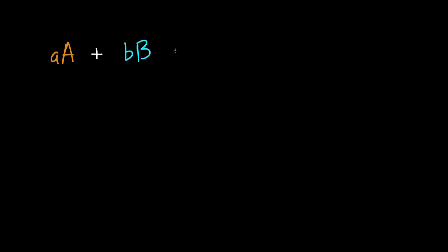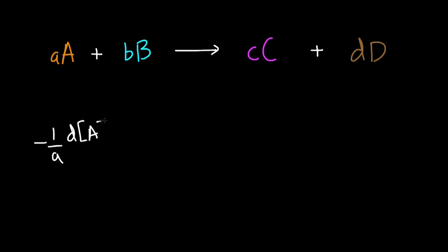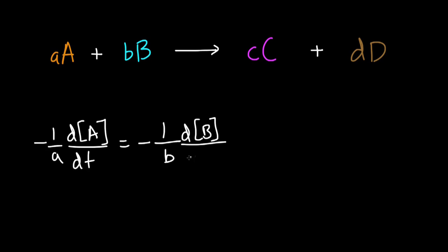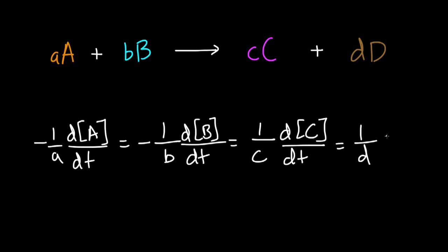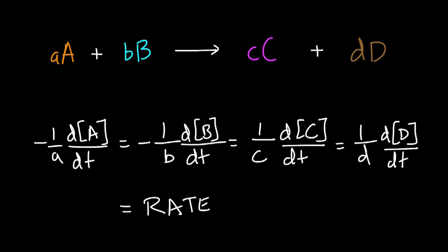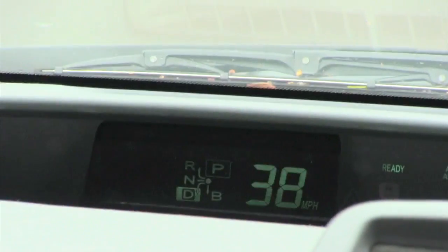Suppose you have this general reaction, where capital letters A, B, C, and D are molecules, and lowercase a, b, c, and d are their molar coefficients. As the reaction progresses, A and B will be consumed, and C and D will be formed. The speed at which any of these four processes happen, multiplied by the reciprocal of the appropriate molar coefficient, is called the rate of this reaction.